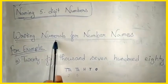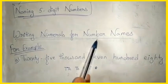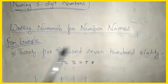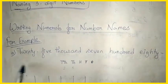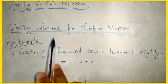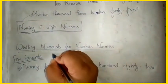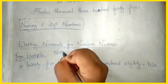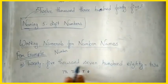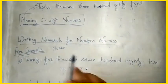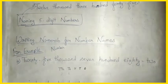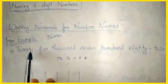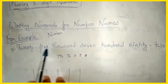Now let us write numerals for number names. A number name will be given and you have to write down the numeral — that means represent the number name using digits only. Let us see the example given.